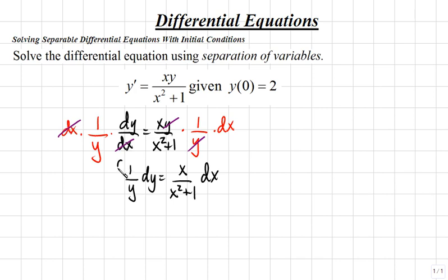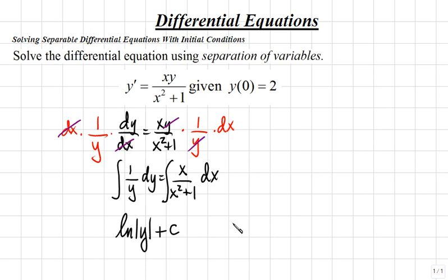Next, let's integrate both sides of this differential equation. We recall that the integral of 1 over y dy results in the natural log of the absolute value of y, plus a constant c. On the right side, to integrate x over x squared plus 1 dx, we'll work this out to the side and then replace the result into our current equation.